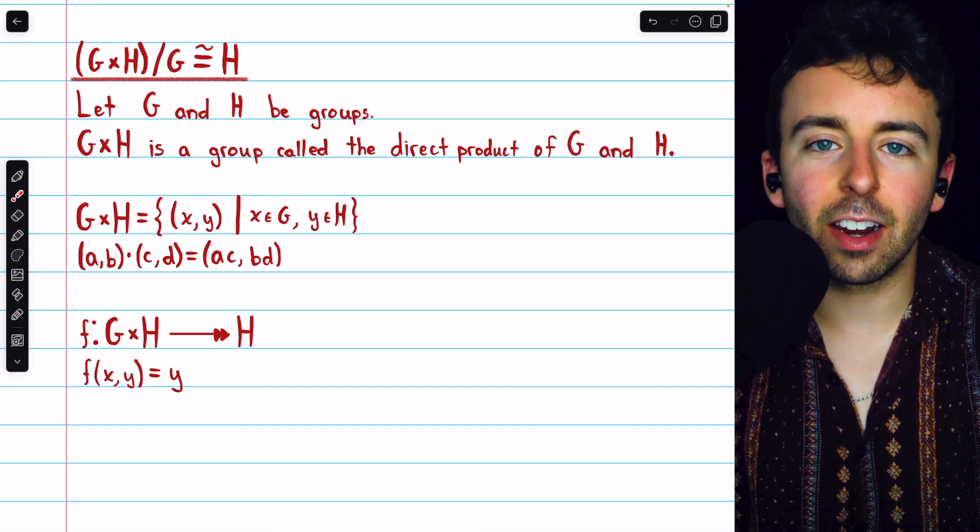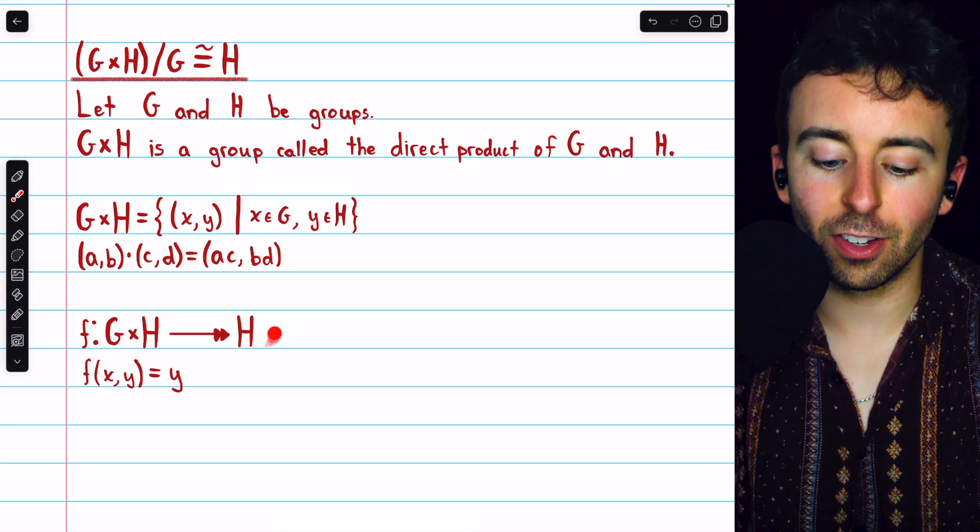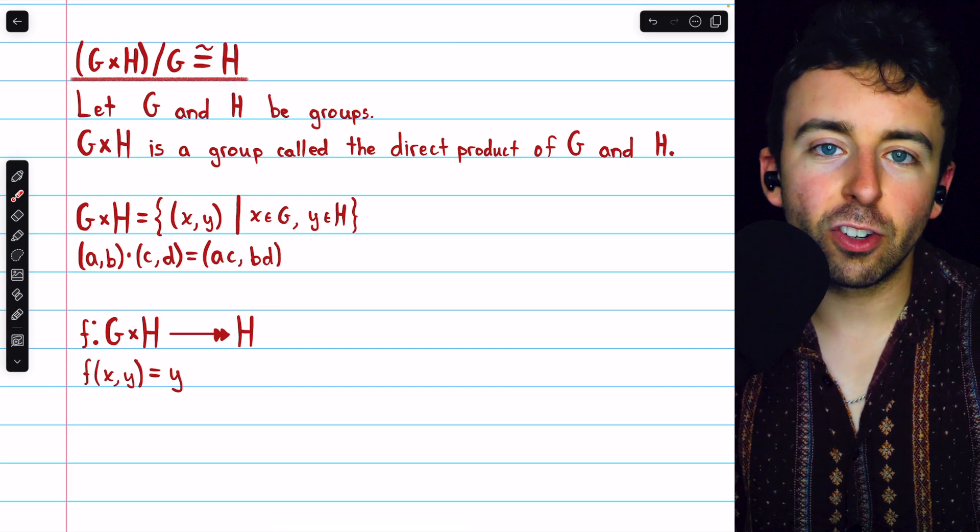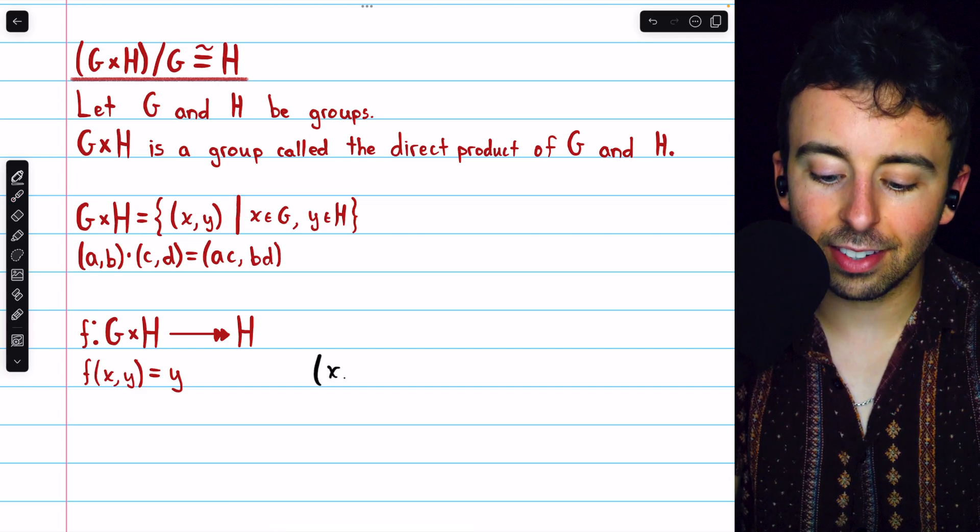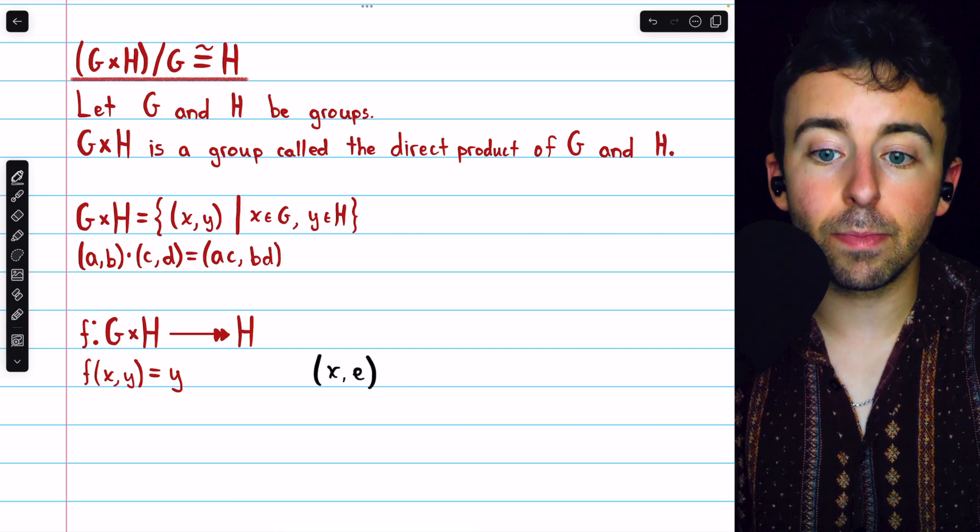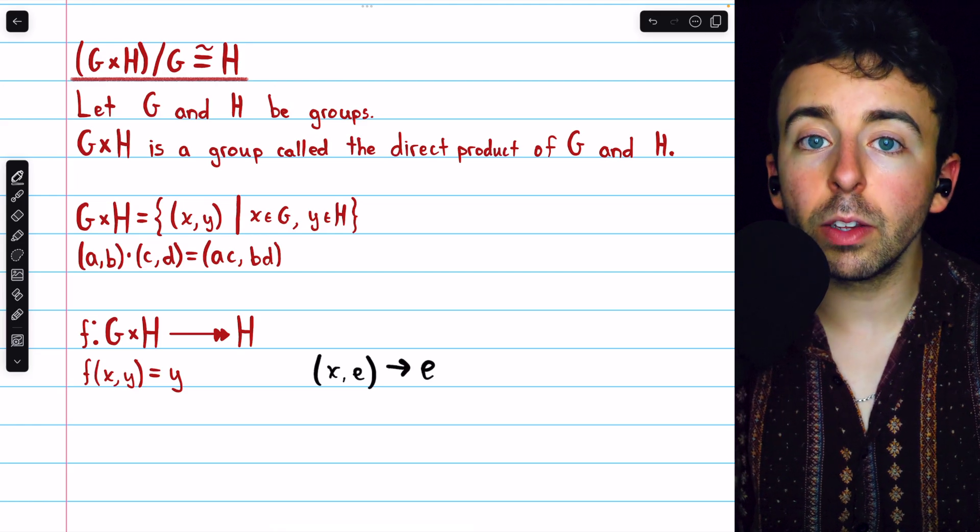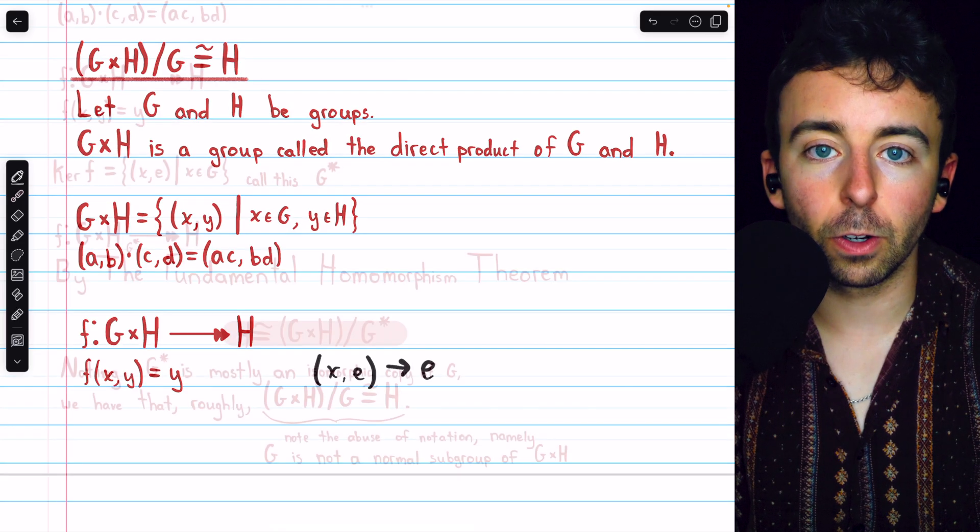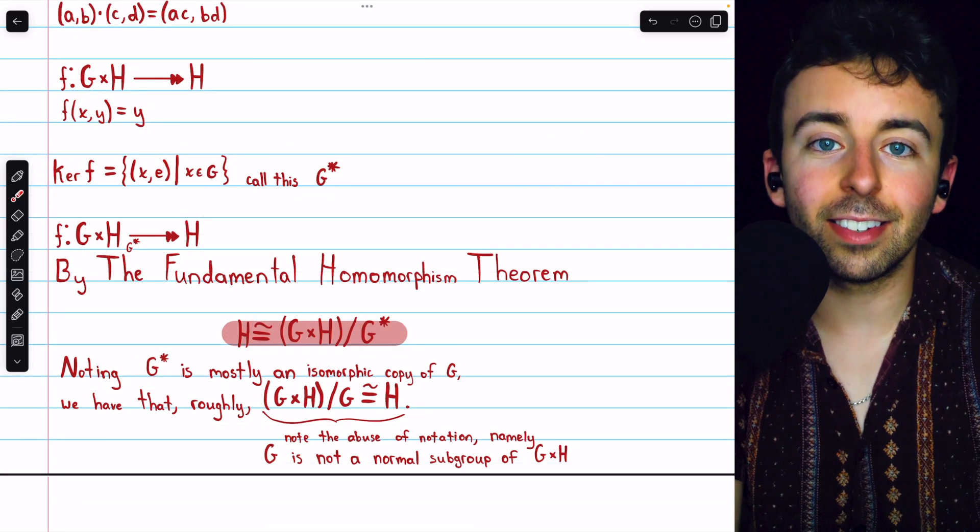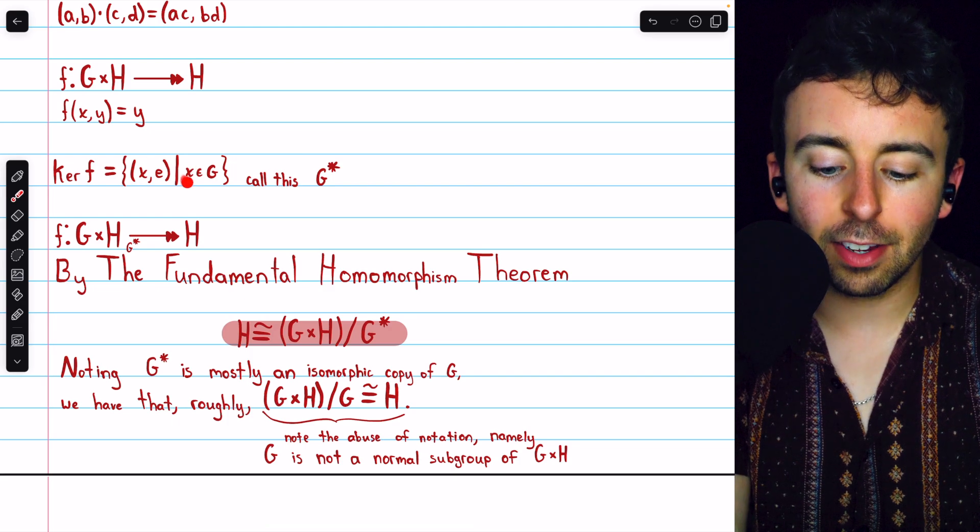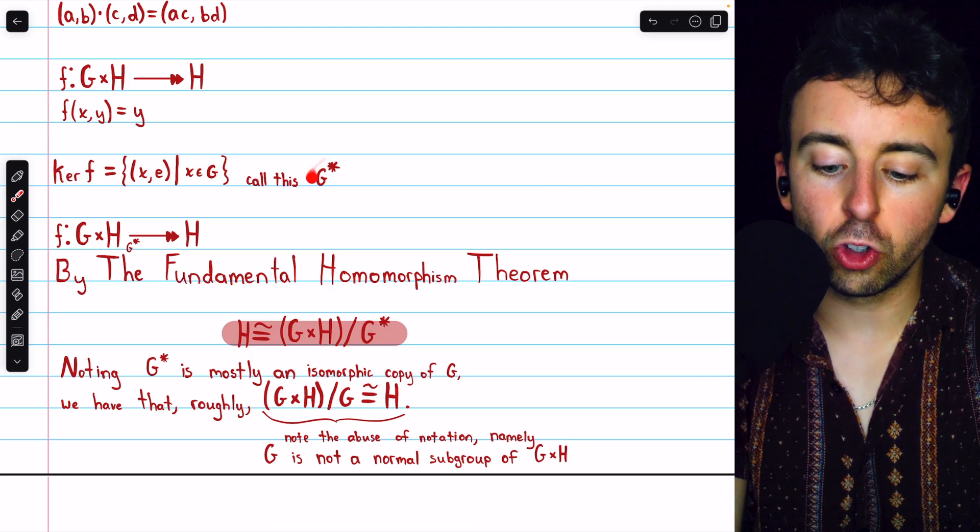So this is a homomorphism from the direct product onto H, and it's important that we identify its kernel, the set of all elements which it maps to H's identity. Let's say H's identity is E. Then any ordered pair of the form XE is going to be mapped to E, the identity in H. So all of those ordered pairs make up the kernel. So there's our kernel consisting of all those ordered pairs XE, where E is the identity of H, and X can be any element from G we like. We're going to call this kernel G star.